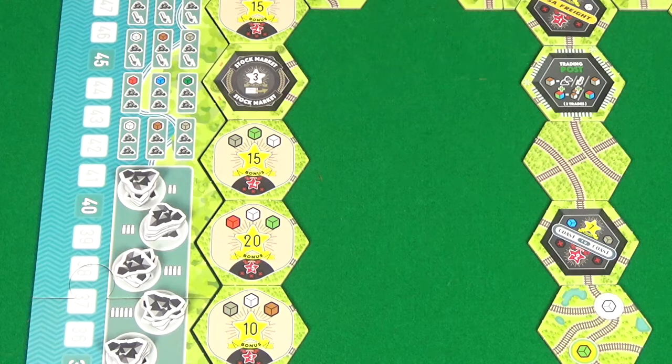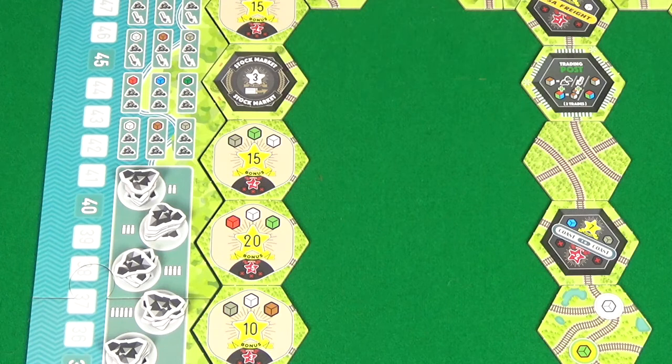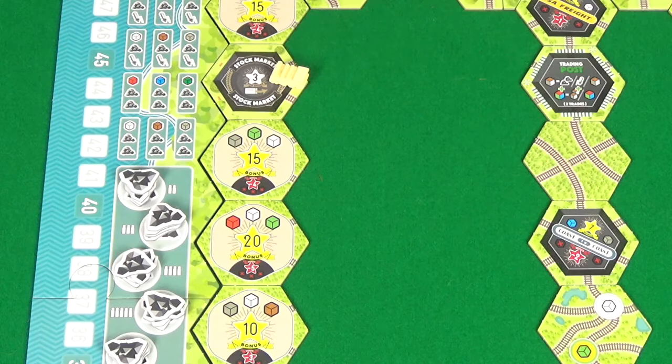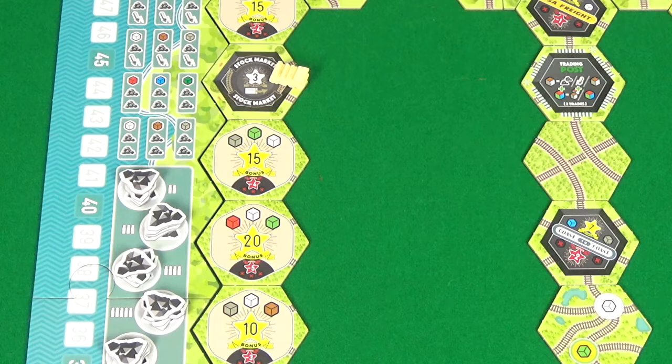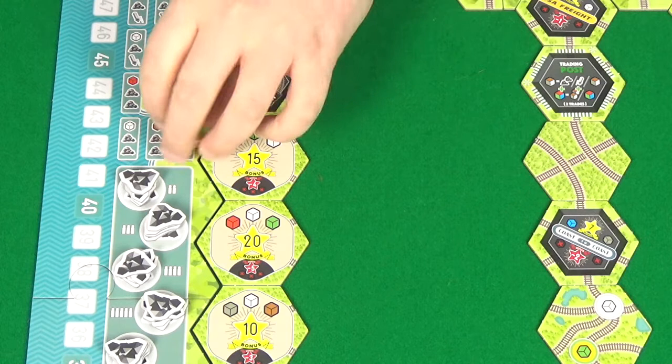The other type of end stop here will also gain you points, but the way these work is these stock markets. When you go here, you'll gain three points for this one for every share that you have, but you then have to discard a share, giving it up so that it won't count towards your end game scoring. However, you still move your train onto one of these spaces as normal.